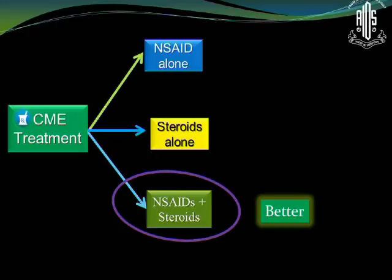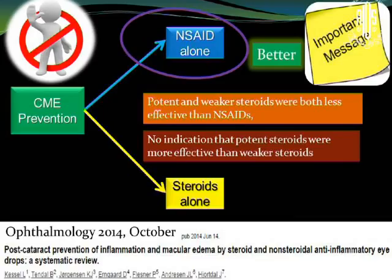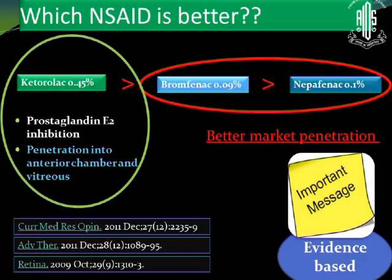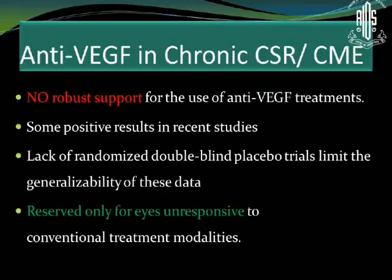Which treatment is better? Using a combination of topical drugs is better than using either alone. For prevention, an important take-home message: NSAIDs alone are better than steroids alone. As for which NSAID is best, Ketorolac has the best data — it has better penetration into the anterior chamber and vitreous — though Nepafenac and Bromfenac are very popular due to better market penetration. As far as anti-VEGF is concerned, there is no robust data to support its use; it should be reserved only for eyes unresponsive to conventional treatment.